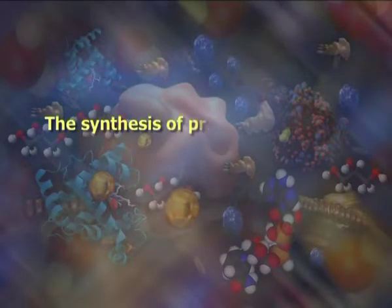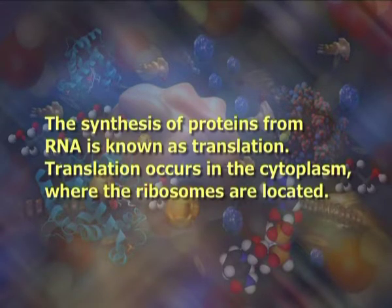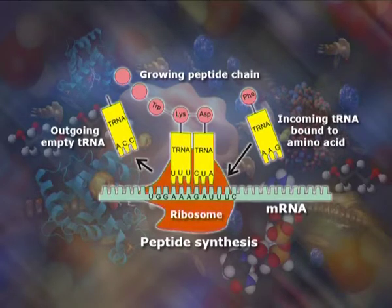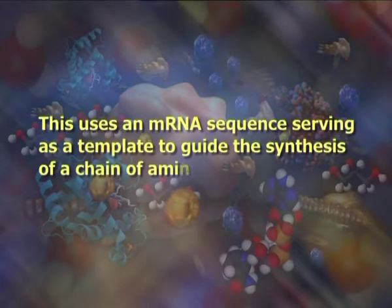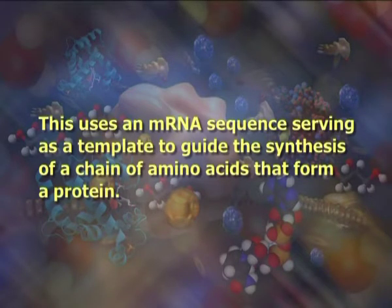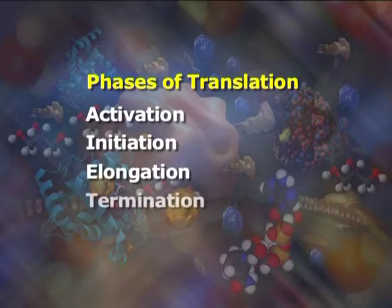The synthesis of proteins from RNA is known as translation. Translation occurs in the cytoplasm where the ribosomes are located. Ribosomes are made of a small and a large subunit that surrounds the mRNA. In translation, mRNA is decoded to produce a specific polypeptide according to the rules specified by the trinucleotide genetic code, using an mRNA sequence as a template to guide the synthesis of a chain of amino acids that form a protein. Translation proceeds in four phases: activation, initiation, elongation, and termination — all describing the growth of the amino acid chain or polypeptide.